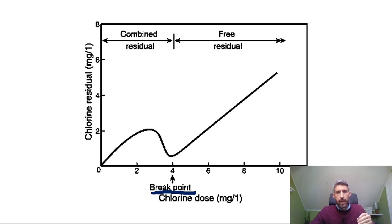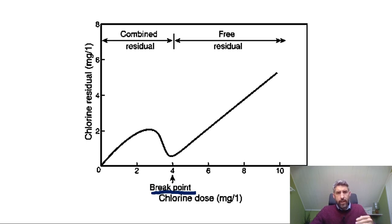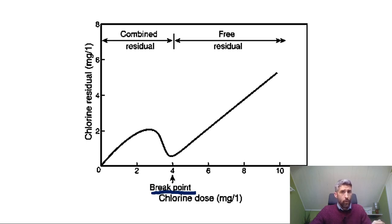There's a graph that accompanies this video on the topic of breakpoint chlorination — click on the information symbols on the graph if you want more granular information about the chemical reactions that are going on. In summary, breakpoint chlorination is where you get an increase in free chlorine with the addition of more chlorine being added to the swimming pool, rather than an increase in combined chlorine when you add more chlorine to the swimming pool.